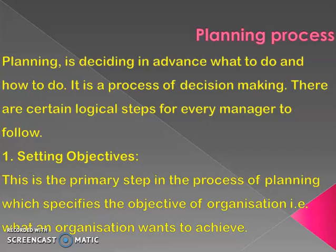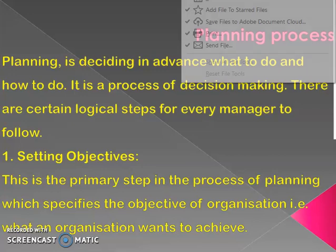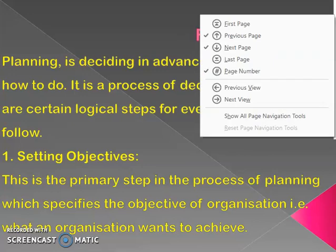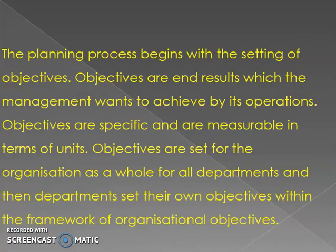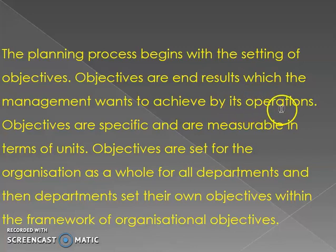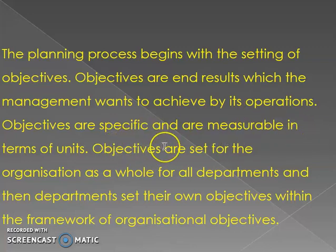Setting objectives is the first and primary step in the planning process, which specifies the objectives of the organization — that is, what an organization wants to achieve. The planning process begins with the setting of objectives. Objectives are end results which the management wants to achieve by its operations. They are specific and measurable in terms of units, and are set for the organization as a whole and for all departments.